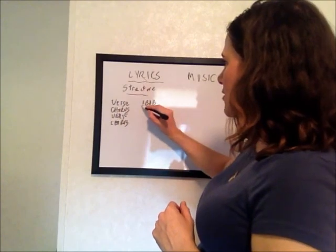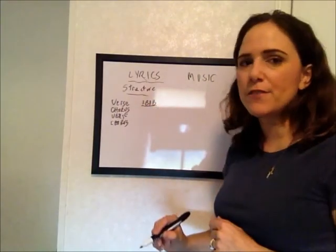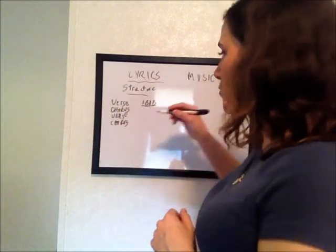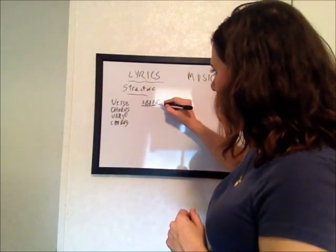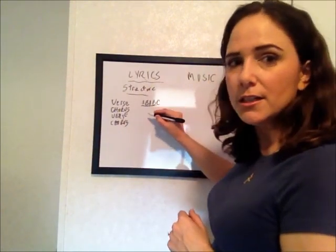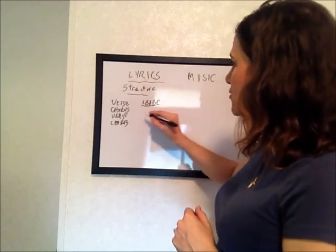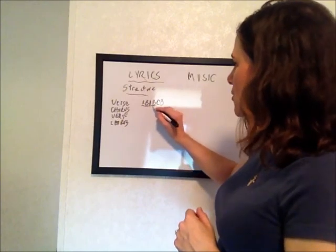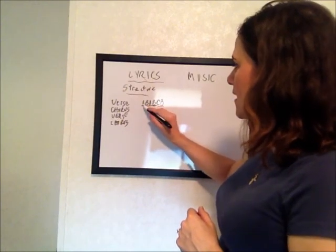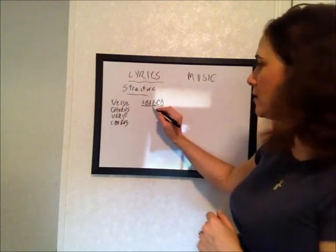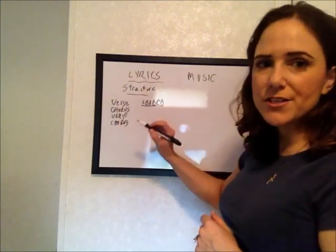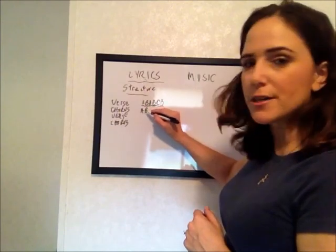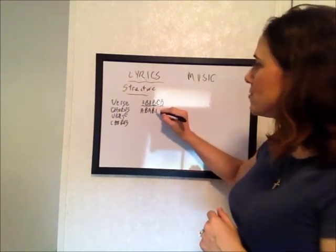A lot of songwriters also use what's called a bridge, and we usually use C for the bridge. So the second most common structure is verse, chorus, verse, chorus, bridge, chorus. Another very common structure is verse, chorus, verse, chorus, chorus.